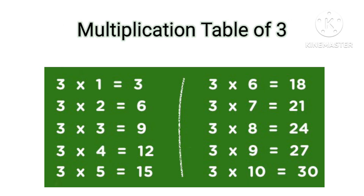Table of 3: 3×1=3, 3×2=6, 3×3=9, 3×4=12, 3×5=15, 3×6=18, 3×7=21, 3×8=24, 3×9=27, 3×10=30.